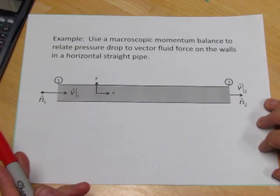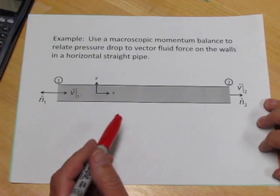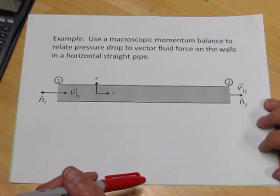This is a problem that when you see the answer you can reason out why it must be true, but I think it's valuable to do it formally with the macroscopic momentum balance to show what the various terms mean in the balance and to see confidently why the result turns out as it does.